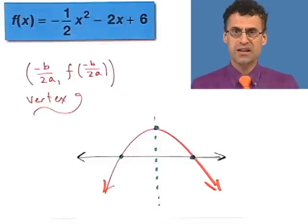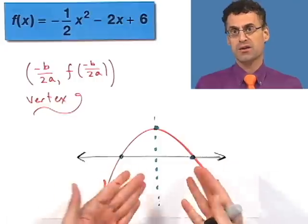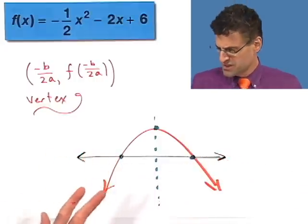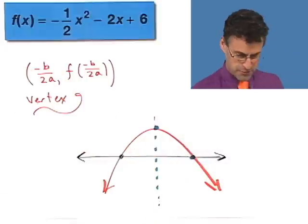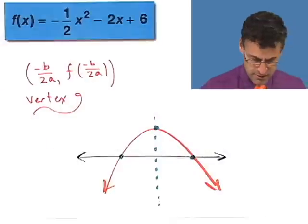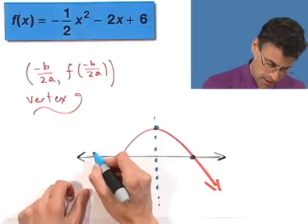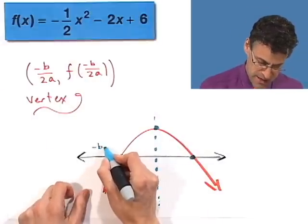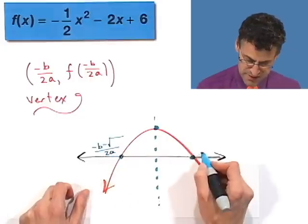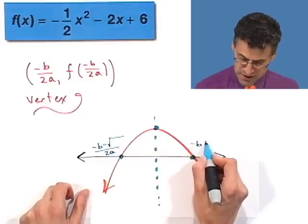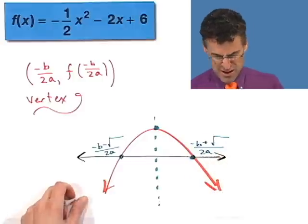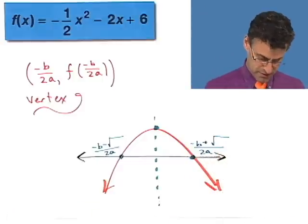All we have to do is look at the two roots and find the number right between them — that's the average. You add them up and divide by two. Let's do that. One root is negative b minus the square root of stuff all over 2a, and the other is negative b plus the square root of stuff all over 2a. You know the stuff is b squared minus 4ac.